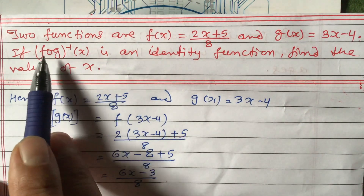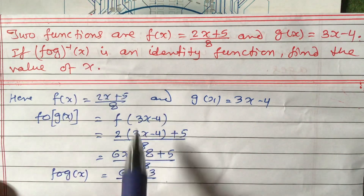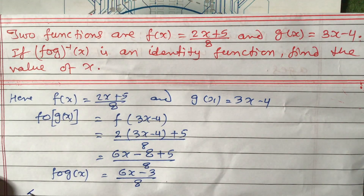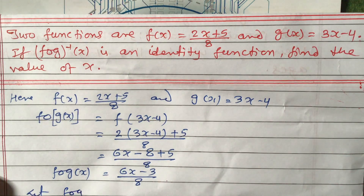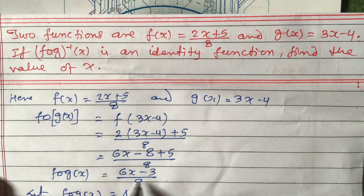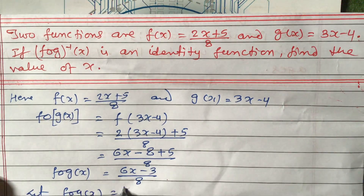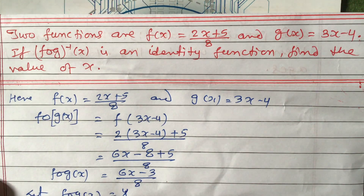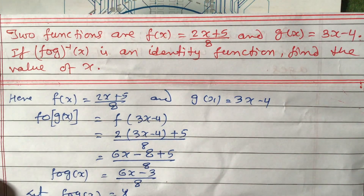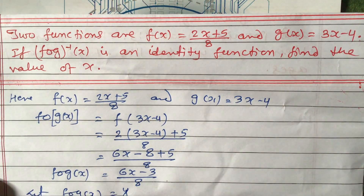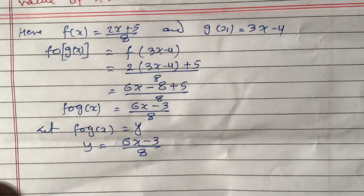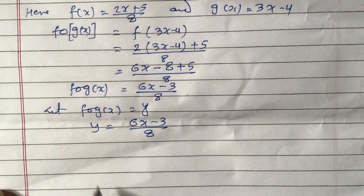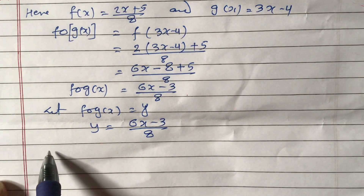But we need to find f of g inverse x. So let f of g(x) equal to y. What we get is y equals (6x - 3) / 8. Now to find the inverse, we need to interchange the elements.